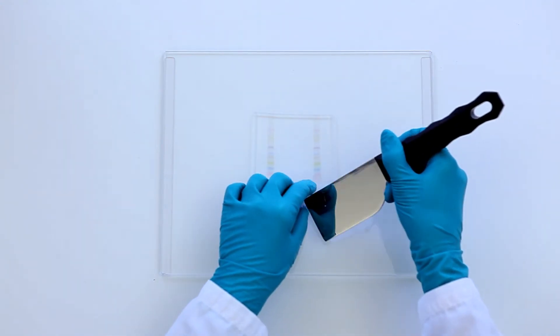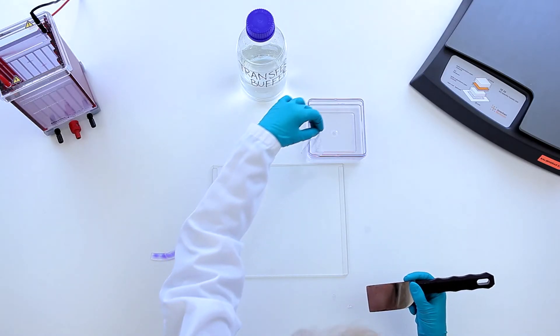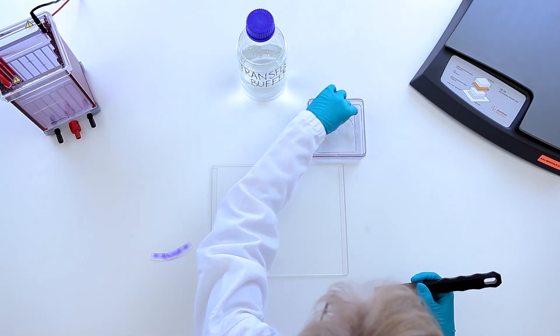Prepare the gel for blotting by trimming excess gel. Equilibrate in transfer buffer for 10 minutes to maintain the shape of the gel. I will now take you quickly through a Western blotting procedure, beginning with building the sandwich and highlighting key issues.